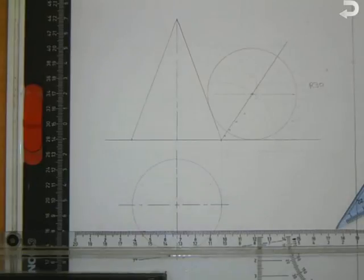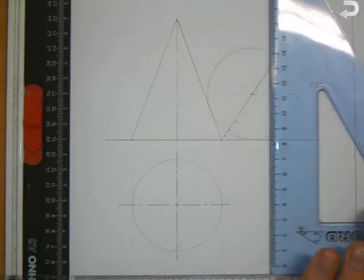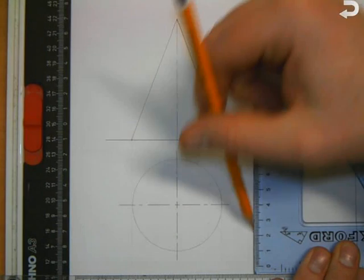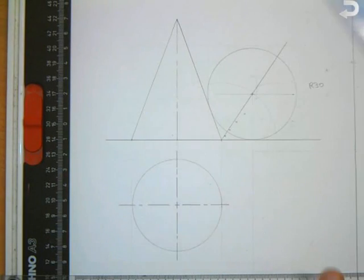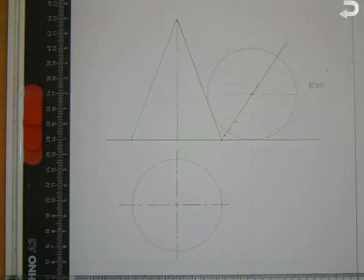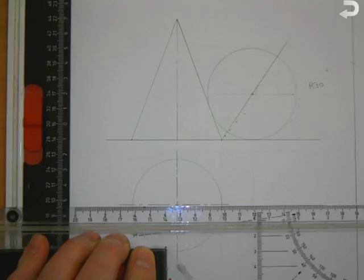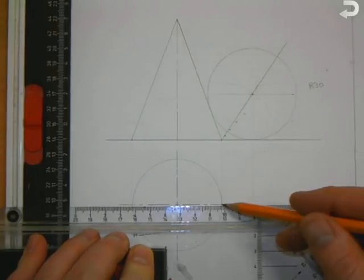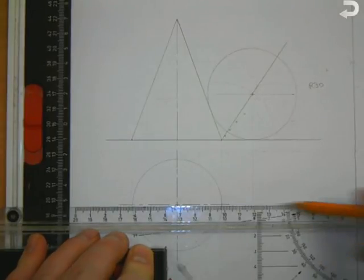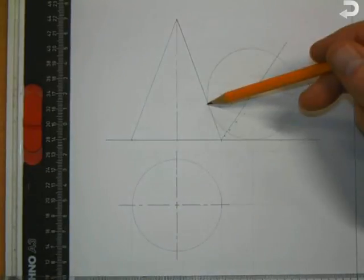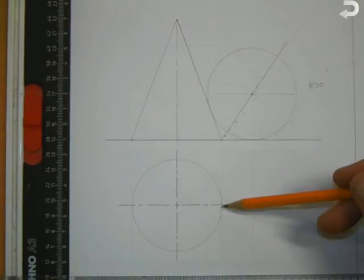Now, to draw it in plan, what we do, we bring our center point straight down because we know where it is. And how do we find where it is in plan? We are going to bring it straight over from the center line. The reason we bring it straight over from the center line, we know it is touching the side of the cone. The side of the cone is the center line in plan.